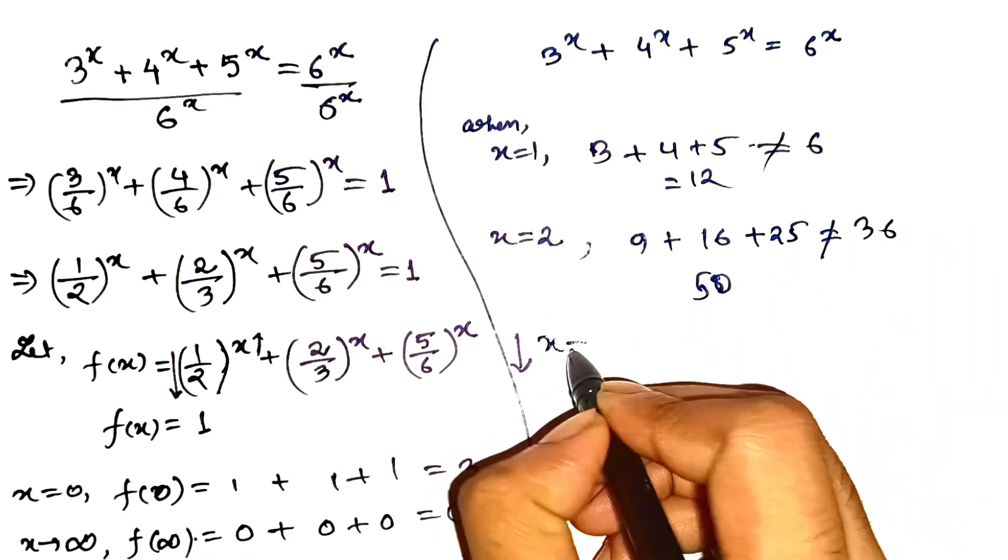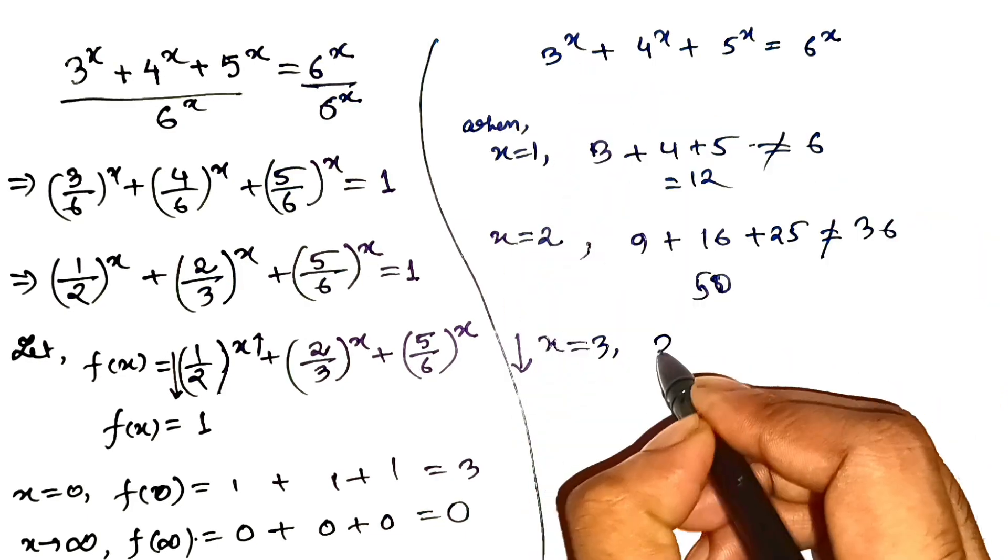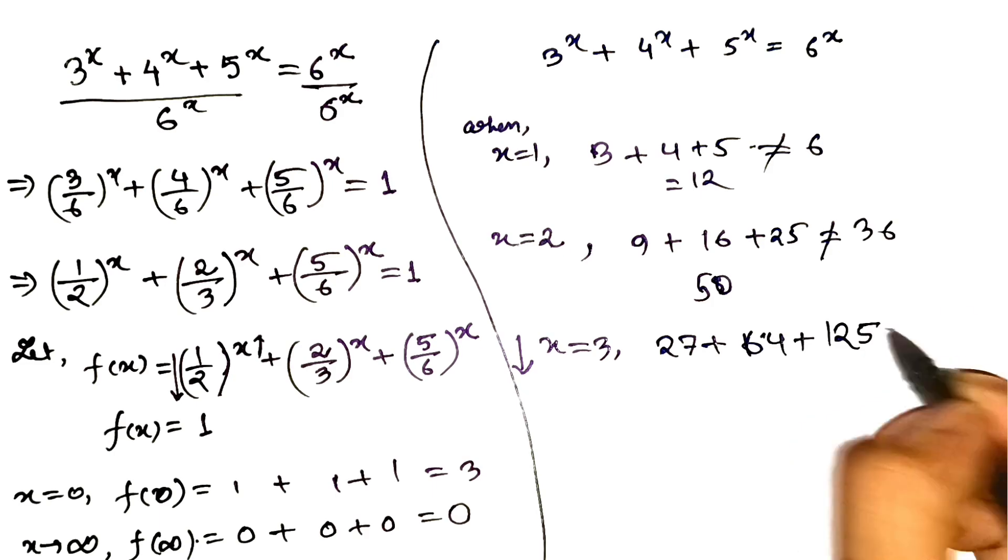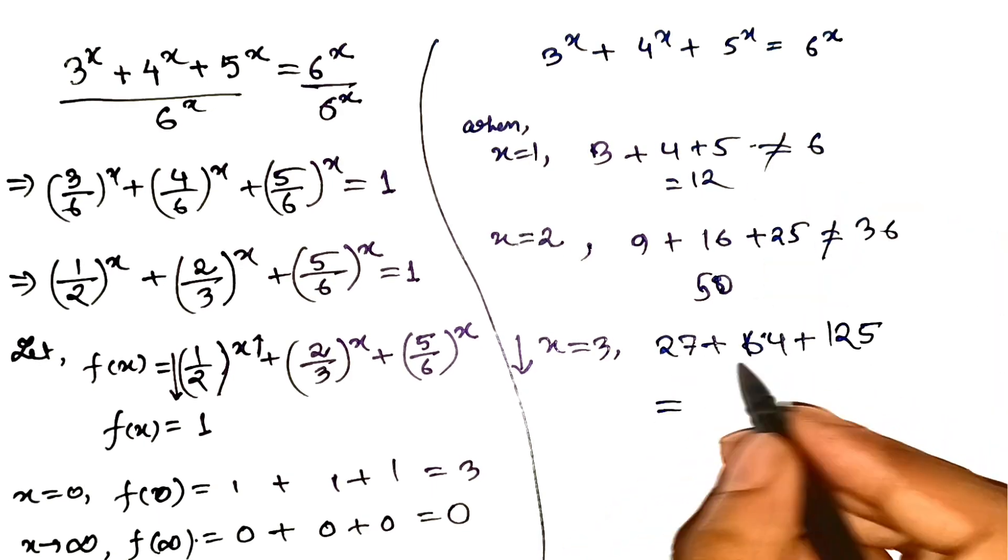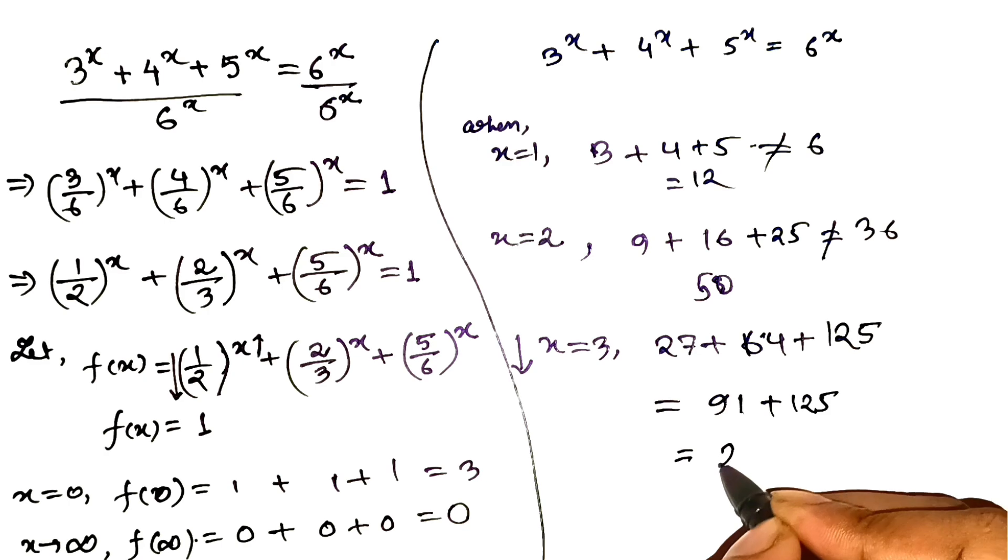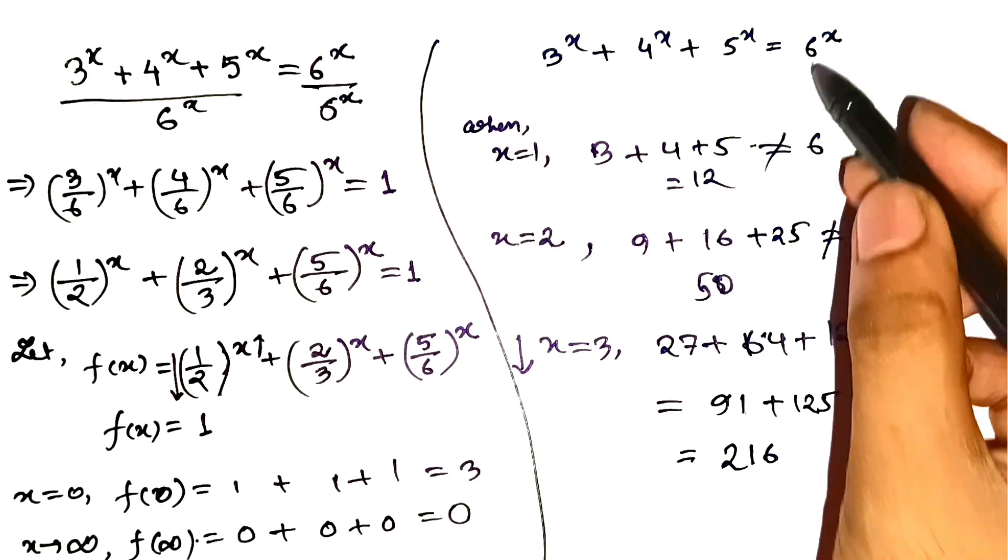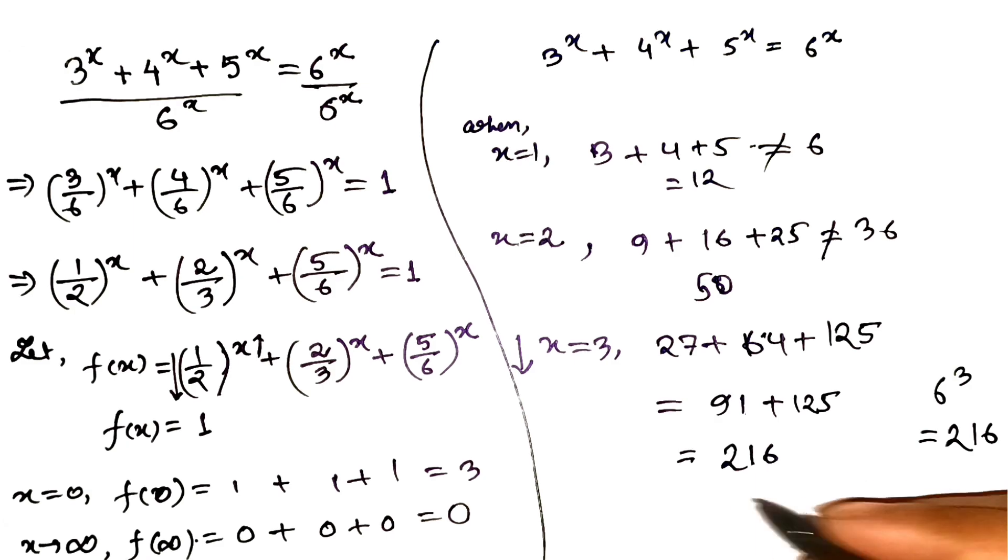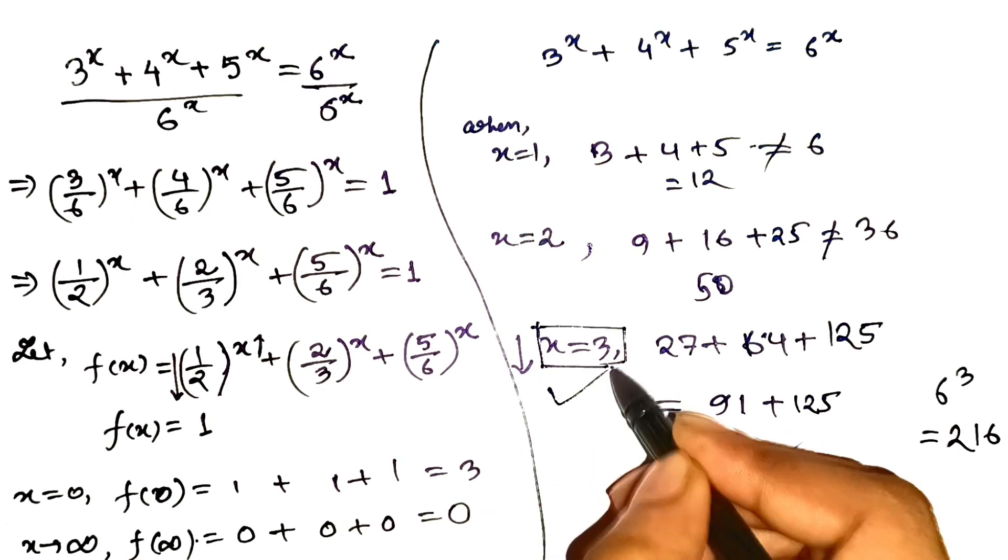Now test x equals 3. Get ready. 3 cubed is 27, 4 cubed is 64, 5 cubed is 125. 27 plus 64 equals 91, and 91 plus 125 equals 216. The right side, 6 cubed is also 216. Boom, perfect match. That's it.